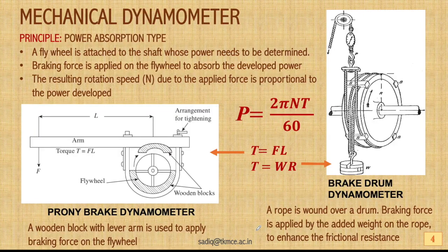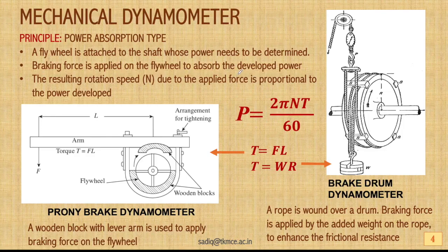Let us see the working and concept of mechanical dynamometers. These are examples of power absorption type dynamometers — during measurement of power and torque they absorb the energy. Generally there will be a flywheel attached on the output shaft of the device for which we want to identify the power. A braking force is applied on the flywheel to absorb the developed power, which reduces the speed of rotation of the shaft.